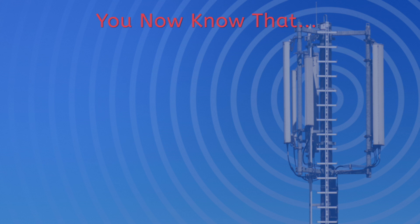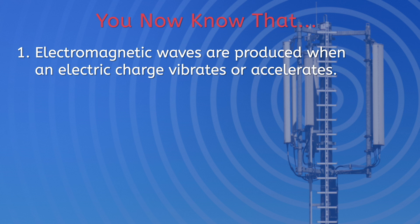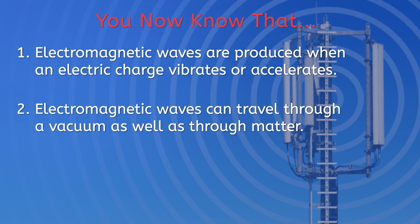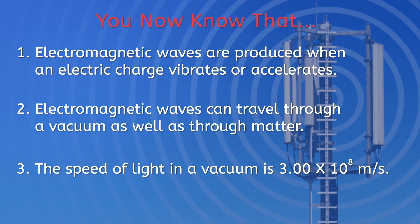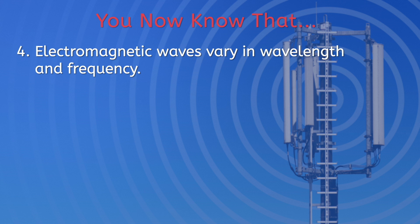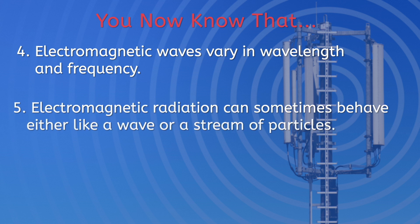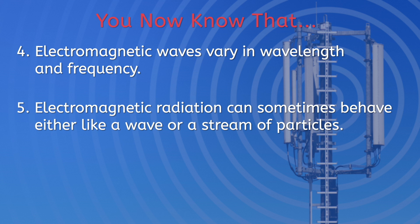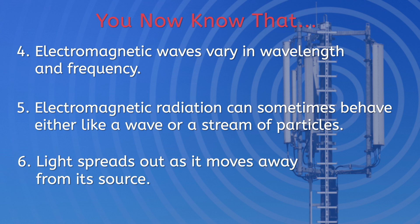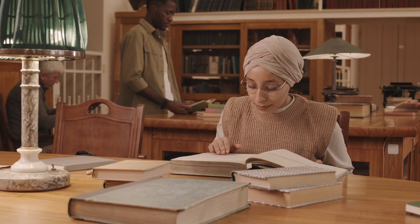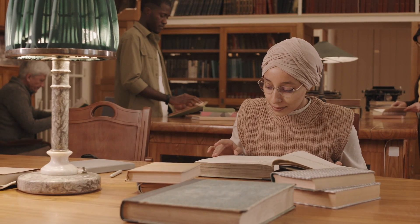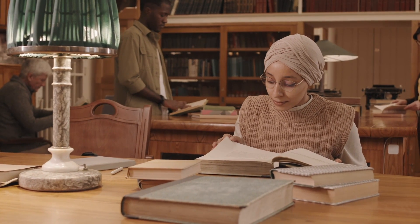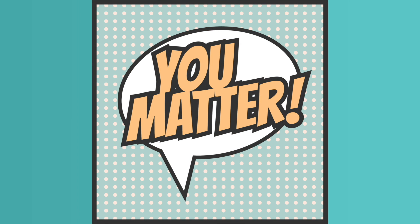That's a wrap on electromagnetic waves! If you were paying attention, you now know that electromagnetic waves are produced when an electric charge vibrates or accelerates; electromagnetic waves can travel through a vacuum as well as through matter; the speed of light in a vacuum is 3 × 10⁸ meters per second; electromagnetic waves vary in wavelength and frequency; electromagnetic radiation can sometimes behave either like a wave or a stream of particles; and light spreads out as it moves away from its source. Don't forget to check out the engaging games and thought-provoking practice problems related to this lesson to prepare for our next class where we'll explore the wildly important laws of thermodynamics. And remember, in science, as in life, you matter. See you next time!